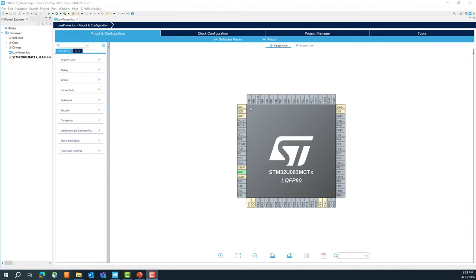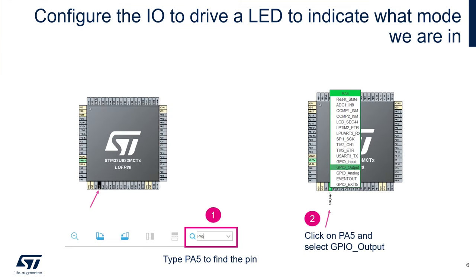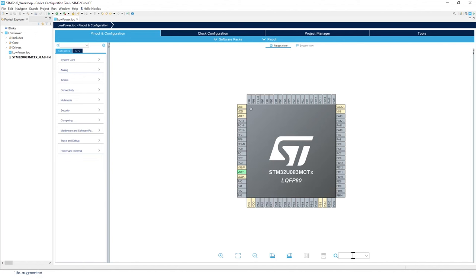After a couple of seconds the IOC file is loaded — if it takes a bit longer on your side, please pause the video. We're going to use the blue LED on your Discovery kit to indicate which mode we are in: run mode or stop mode. To do this, we'll enable PF5 as a GPIO output to drive it high or low. Use the magnifier to find PF5, then left-click and select GPIO Output.